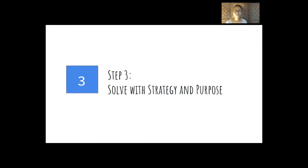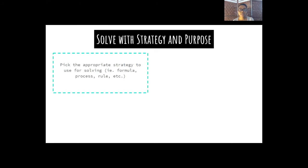Now we're on to the third step. Solve with strategy and purpose. The first thing you want to do is pick the appropriate strategy to use for solving. That could be a specific formula. Maybe you need to use the quadratic formula. Or maybe you need a process like solving for Y or solving for X. Maybe you need to apply a certain rule, the Pythagorean theorem or something like that, in order to complete the process of solving this word problem.